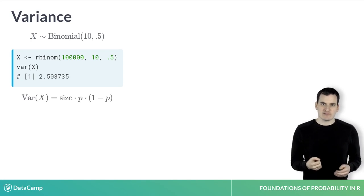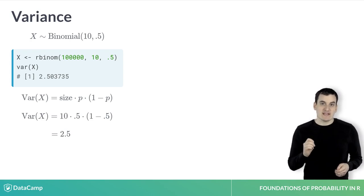The variance of the binomial distribution in general follows a particular rule, which is that the variance is the size times p times 1 minus p. So for example, the variance of the binomial with parameters 10 and 0.5 is 10 times 0.5 times 1 minus 0.5, which is 2.5, just as we saw in the simulation.